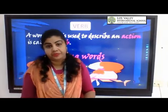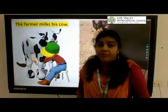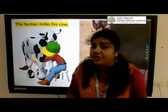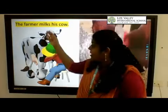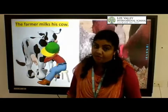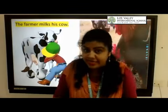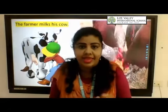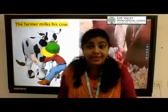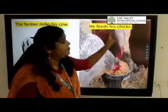So a verb is an action word or a doing word. Let us see different examples. We can see: the farmer milks his cows. Now what is the action word here? Which word is describing the action of the farmer? Milk — that's right. So 'milk' describes the action of the farmer. Here the word is 'milks' and not 'milk', because 'milk' is a thing. So 'milks' is a verb.